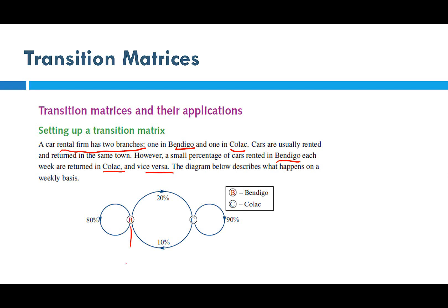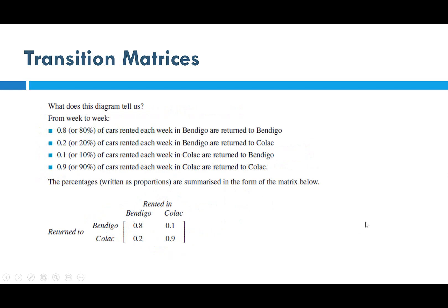In the diagram, B represents Bendigo and C is Colac. 80% of cars rented in Bendigo are returned to Bendigo, and 20% of cars rented in Bendigo are returned to Colac. In Colac, 90% of cars rented in Colac are returned to Colac, and 10% of cars rented in Colac are returned to Bendigo.